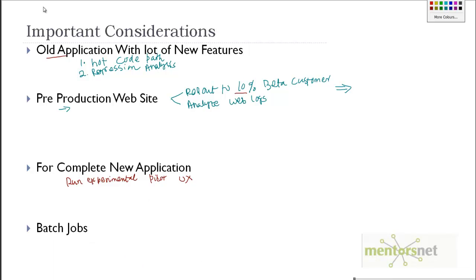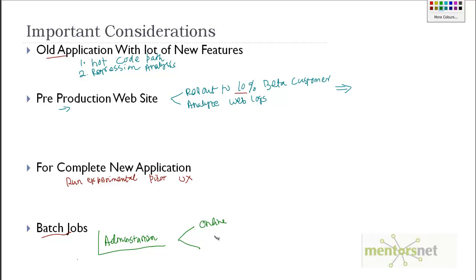Finally, one very important thing that a lot of people do not consider in performance testing is batch jobs. When your application is online, from time to time there might be some administration work going on. Whatever workload you are defining should include this kind of administration overhead. Sometimes a lot of batch jobs run at night. Your workload will have two components: first, the online activities happening on a transactional basis, and second, the batch jobs. If you do not consider batch jobs, the performance for online users during that time is going to suffer. Do consider batch jobs whenever you are creating your workload.